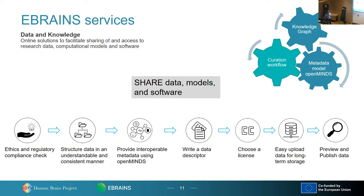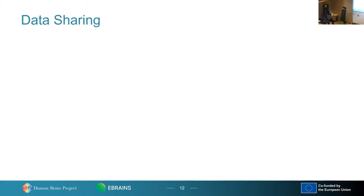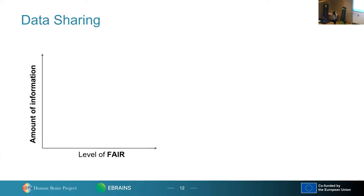Now Mikey will bring you into what is really this sharing process. Jan already told us about the general concept of the data and knowledge services, and I will give you a bit more detail about the data sharing process within eBrains. When we think of data sharing, we also immediately think of FAIR data, and I'd like to illustrate it with the following graphic. We typically think about how much information is shared, but also what the level of FAIR is for this type of data, and there's a trade-off between these two factors.